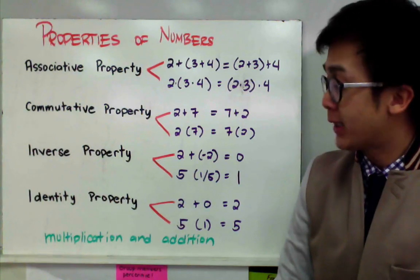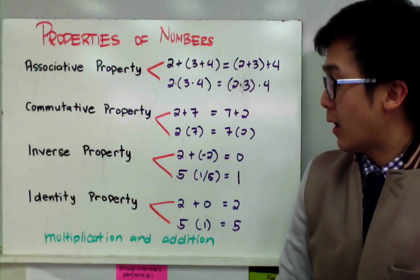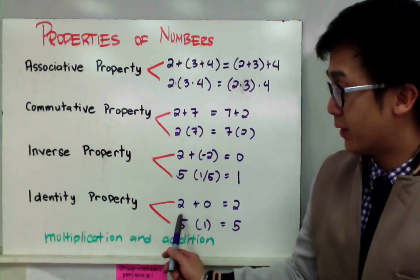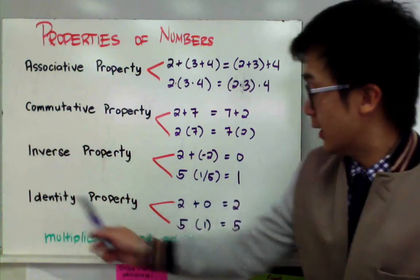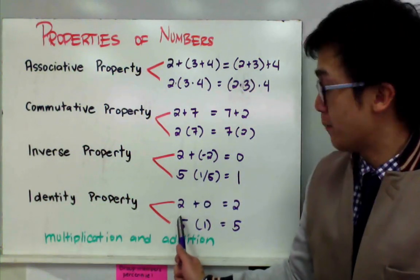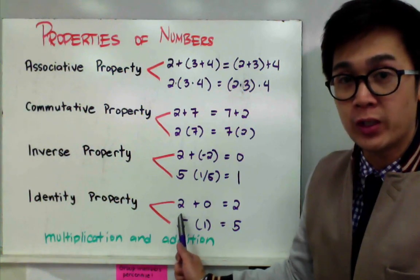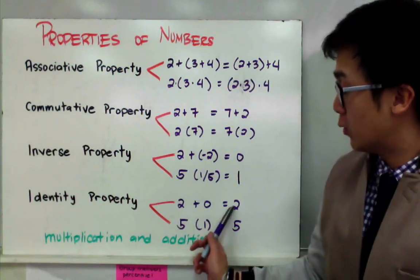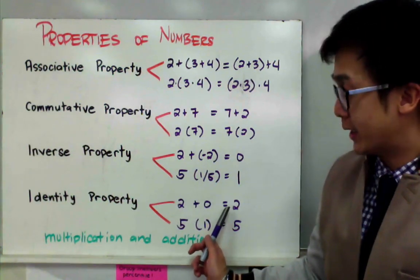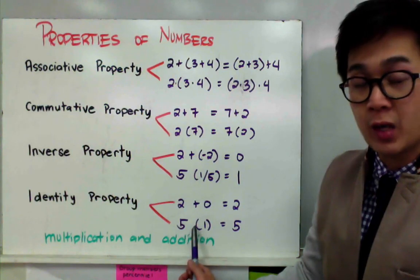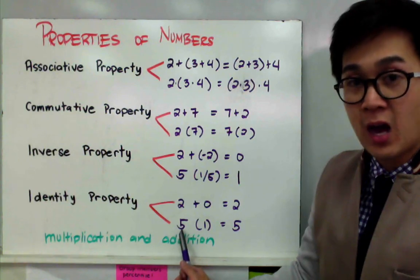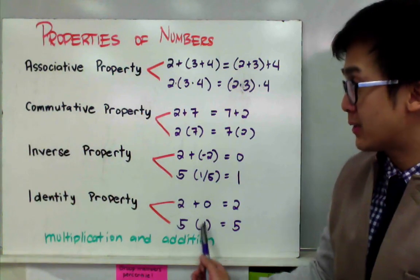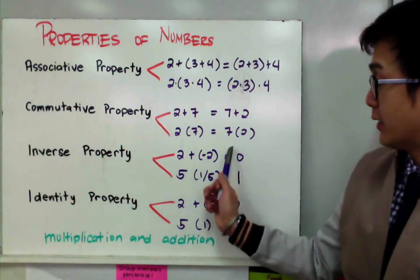Now the identity property is basically telling you what to add or multiply to a certain number for it to be equal to the number itself — that's why it's called identity. For addition, if I have two and I need to find a number to add to two for it to equal two, that number will be zero. So two plus zero equals two. Under multiplication, if you want to multiply five for it to equal five, that number will be one.